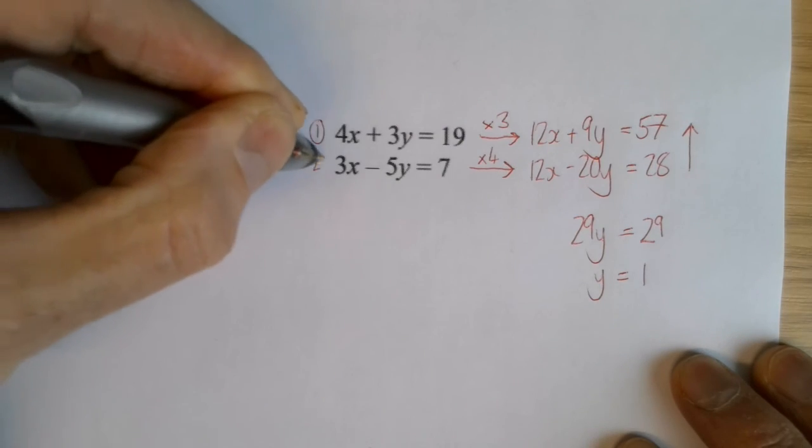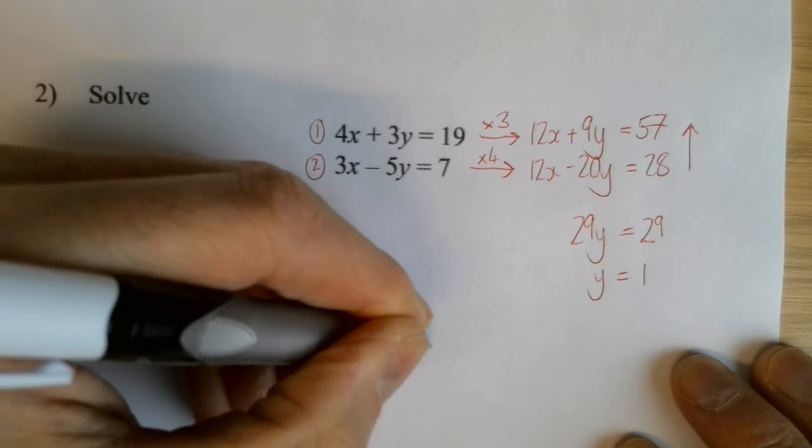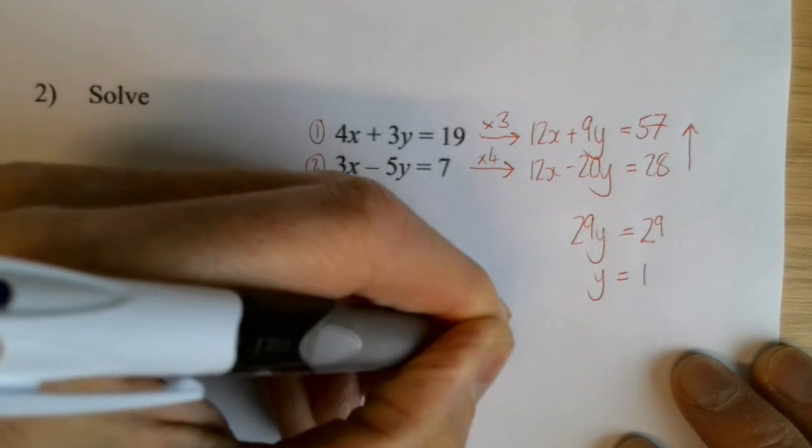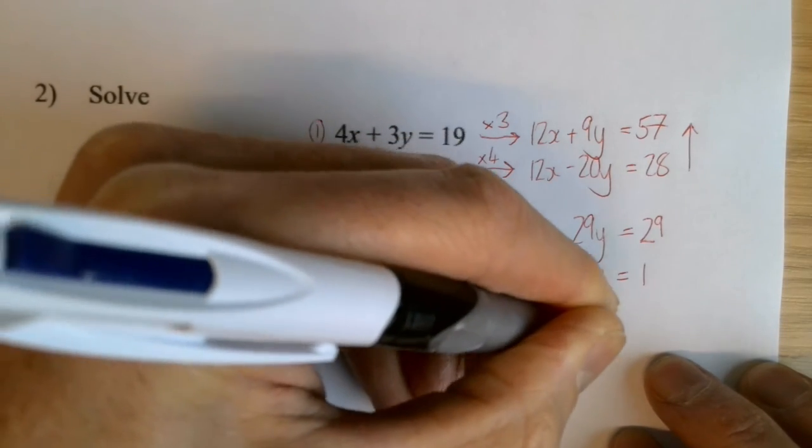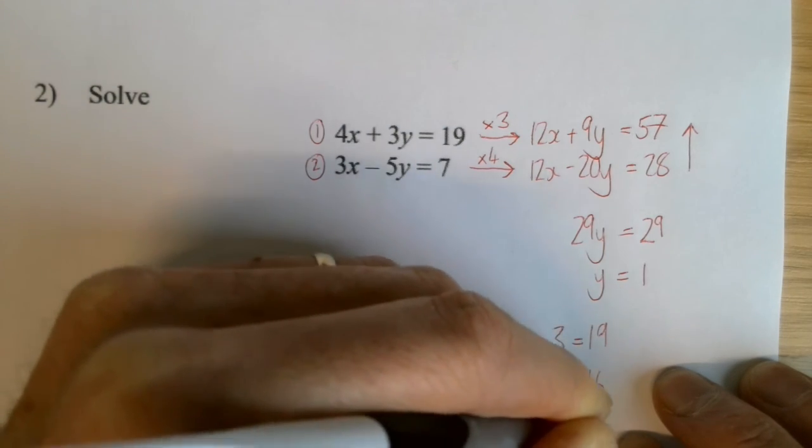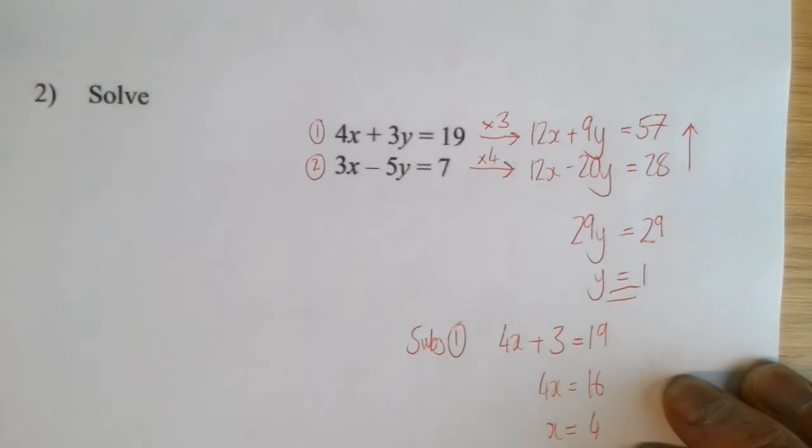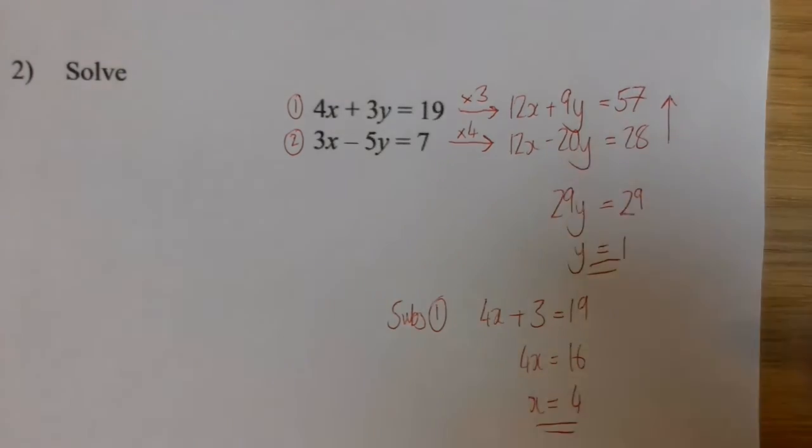Then I'm going to rewrite one of my two equations. It doesn't matter which one. I'm going to rewrite the first one. So 4x plus 3 lots of y. Well, if y is 1, that's 3. So 4x equals 16. So x must be 4. So that's my solution. x is 4 and y is 1.